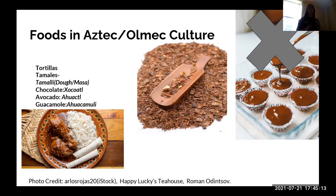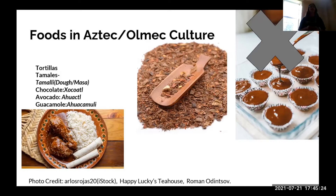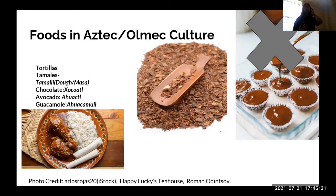A lot of words we use today, like 'avocado,' come from Nahuatl. In Spanish it's 'aguacate' — you can hear how similar that sounds — and then we get 'guac.' Guacamole comes from the Aztec word 'ahuacamolli.'